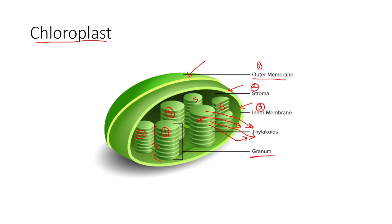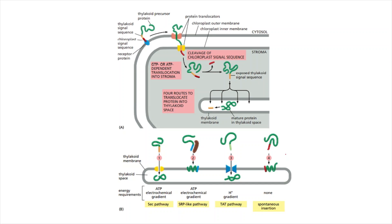Individual units of the grana are called thylakoids. Now let us see the protein transport into chloroplasts. Any organelle protein will contain an N-terminal signal sequence — this is common for any organelle protein, whether it is mitochondria or chloroplast. This signal sequence is recognized by a protein called SRP, or the signal recognition particle.